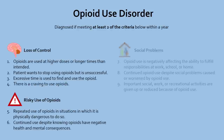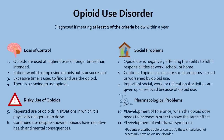Opioid addiction, which medically is termed opioid use disorder, is diagnosed when a patient satisfies at least two of the criteria shown here within a year. The more criteria that are met, the more severe the opioid use disorder. These criteria essentially measure the extent of the detrimental effect of opioids on a patient's mental state, physical health, and social life.